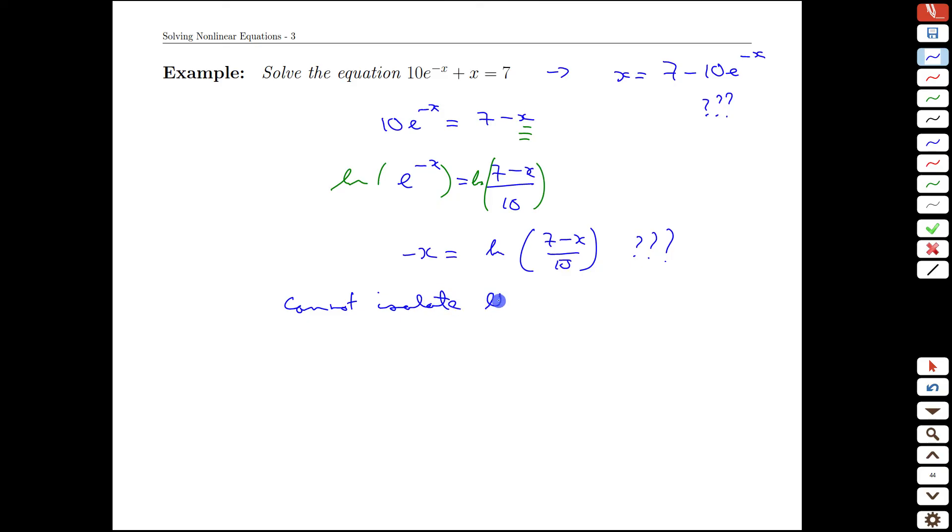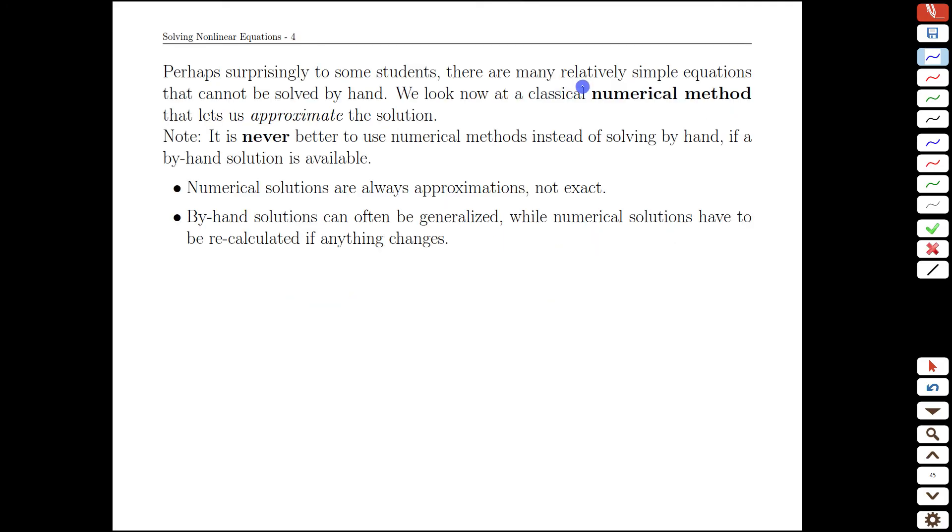We can't seem to isolate that x because there's two of them in the equation, and that's just the nature of the beast. This equation cannot be solved by hand manipulations. It just can't be. It's too complicated because it has too many x's in different kinds of places. So where does that leave us? Well, it turns out that it's pretty easy to write equations that we actually cannot solve by hand, no matter what kind of manipulations you're familiar with.